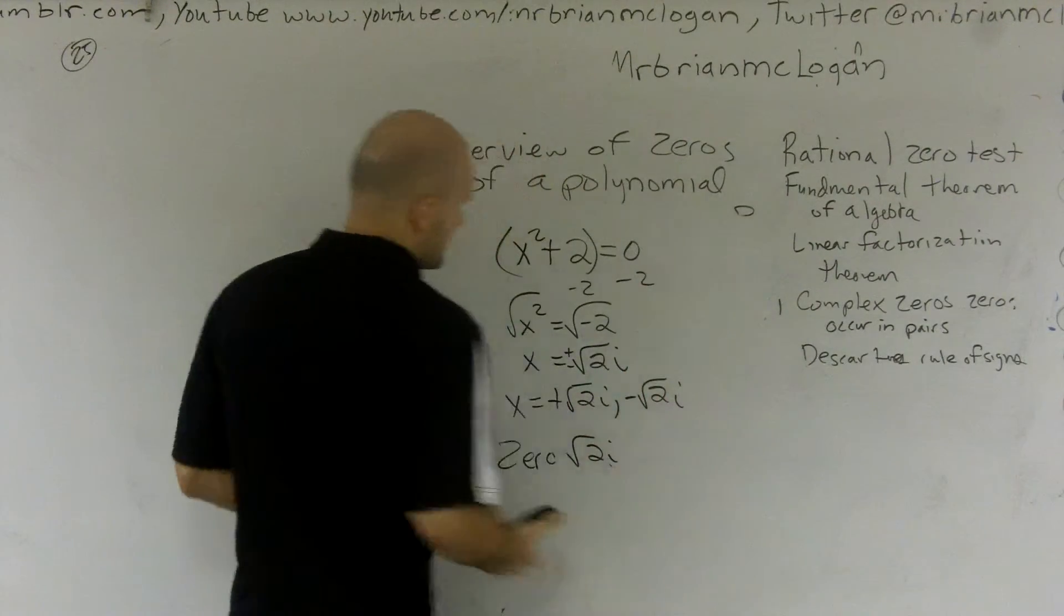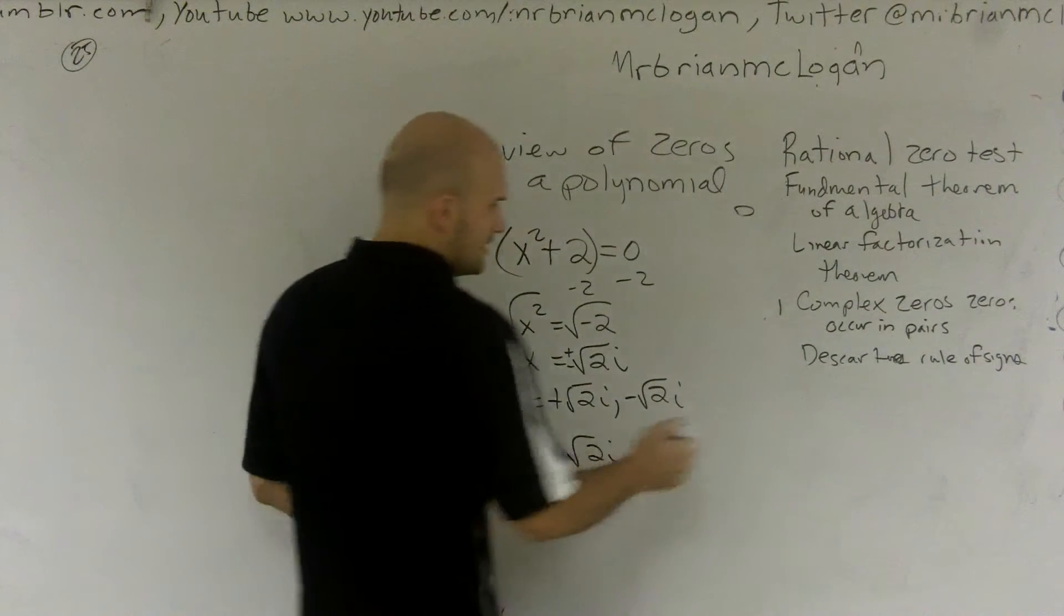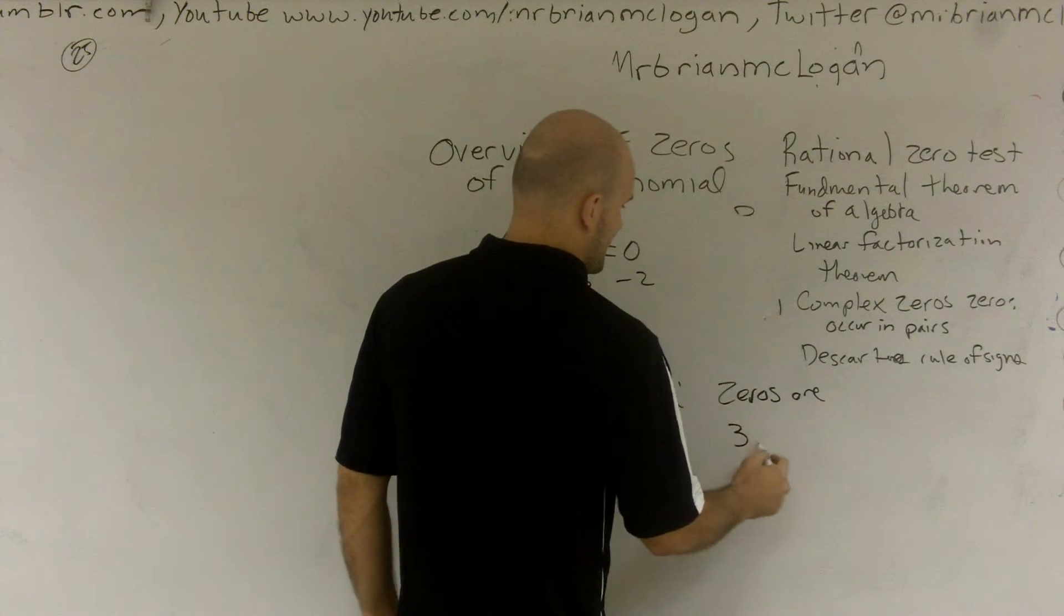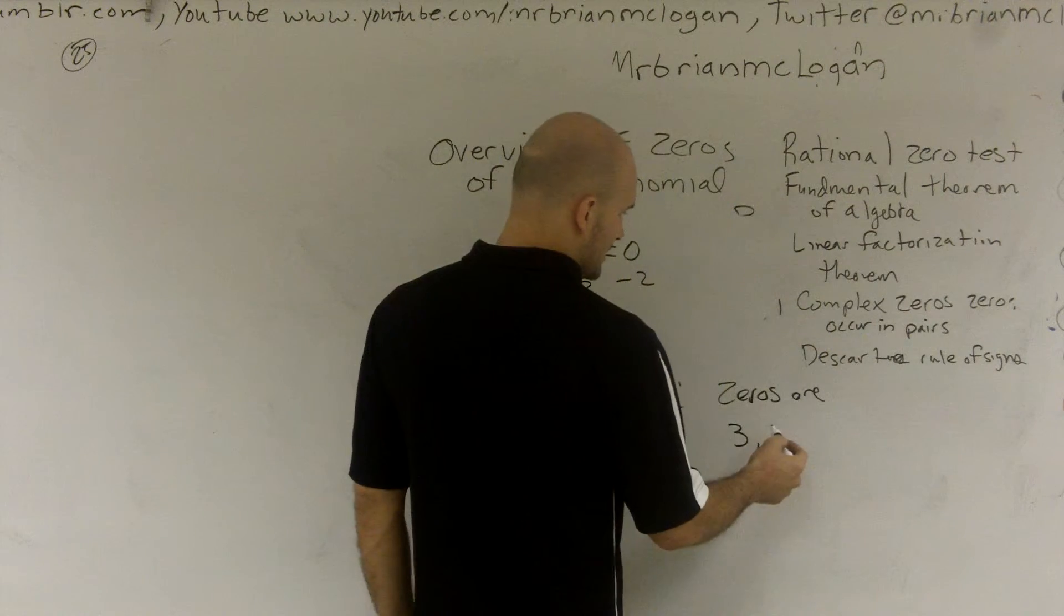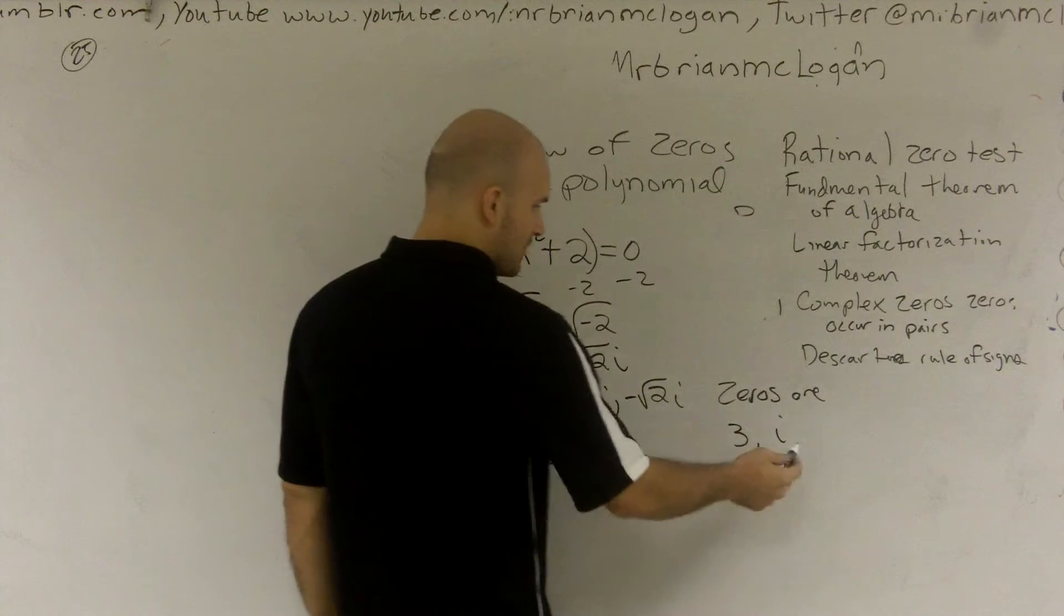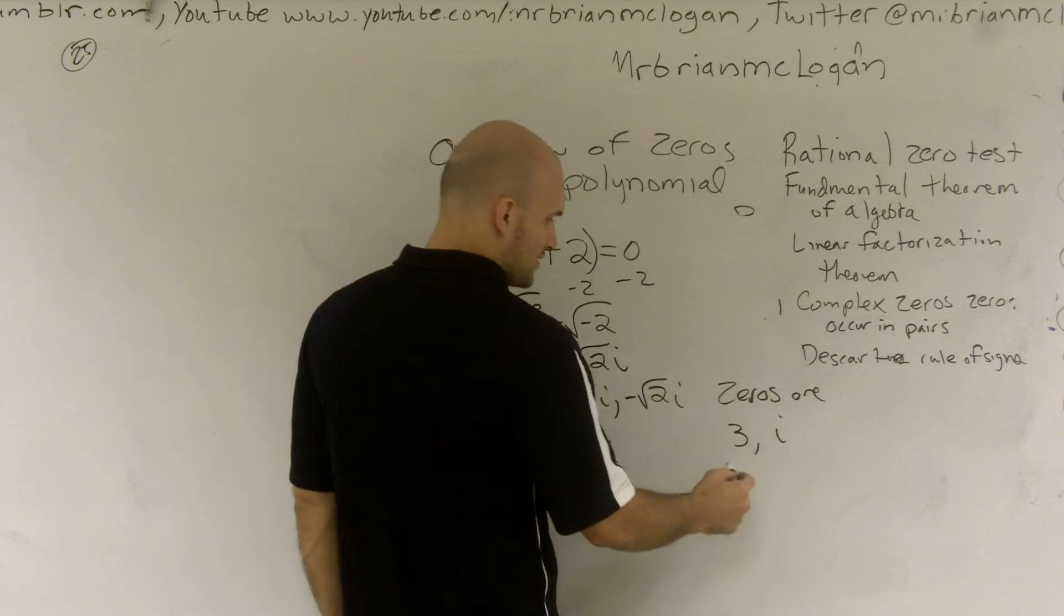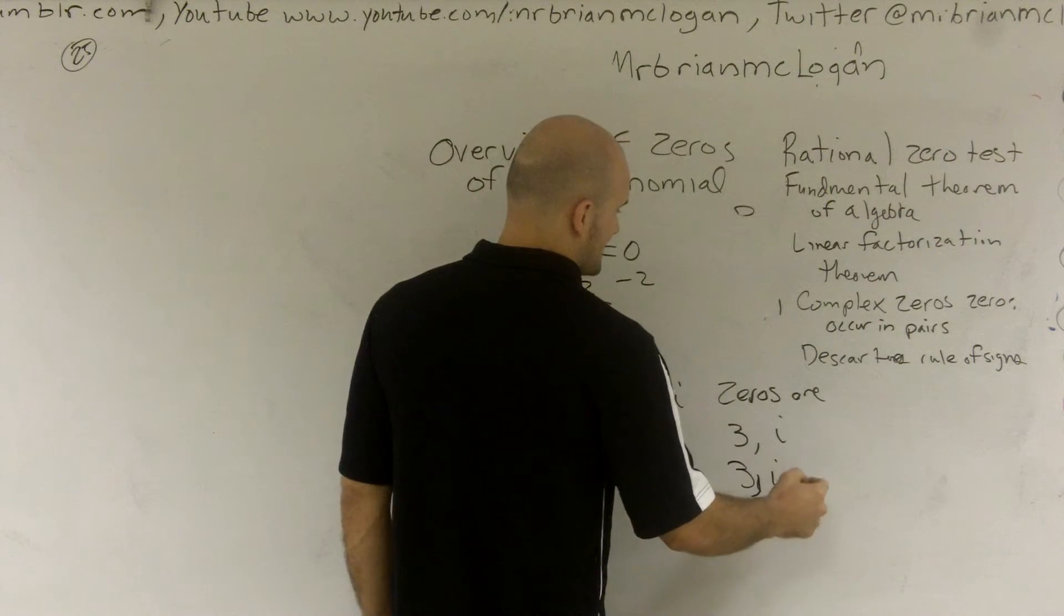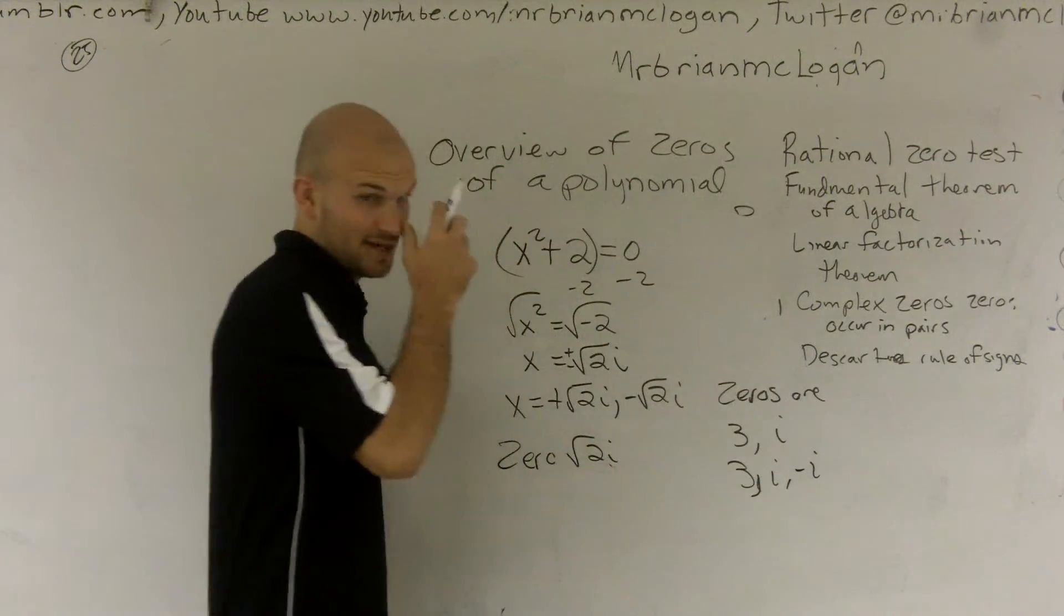That's one thing you need to know. If you find a zero and one of it is a complex number, then you know the conjugate is also going to be a zero. One thing that's helpful is in a math problem sometimes we do the zeros are 3 and i. Well, therefore, I know that the real zeros are 3, i, and -i.